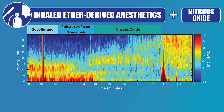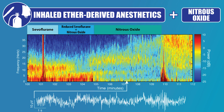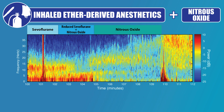After the sevoflurane is stopped, the EEG transitions to beta-gamma oscillations, which is commonly associated with nitrous oxide. As the nitrous oxide is stopped, the pattern evolves into high beta-gamma oscillations as the patient emerges from unconsciousness.